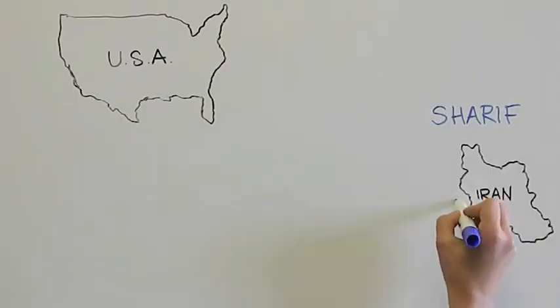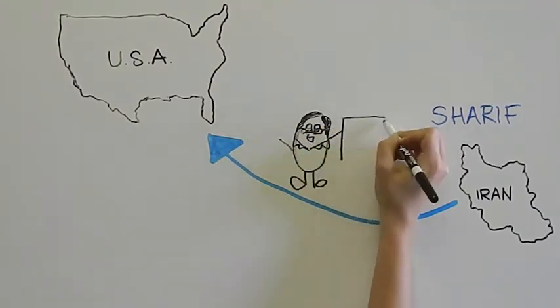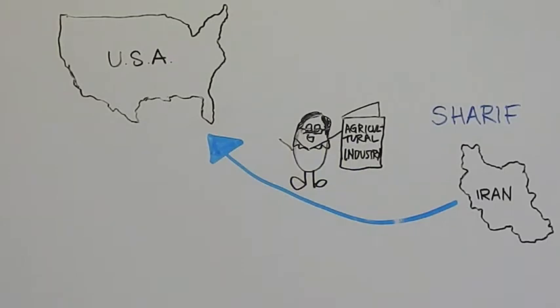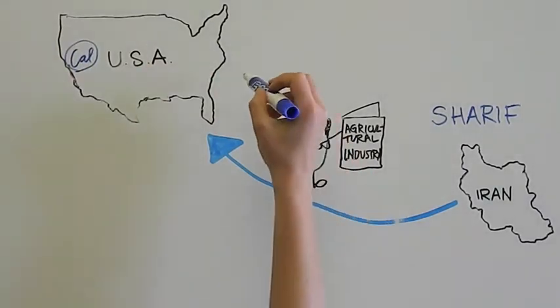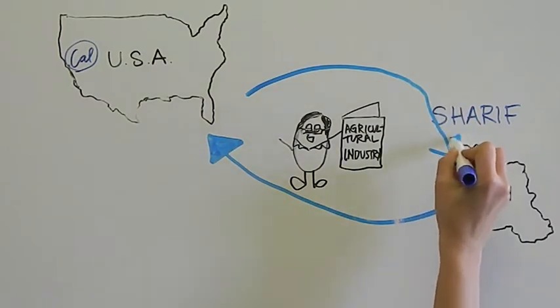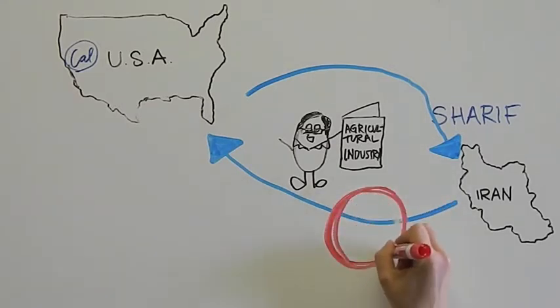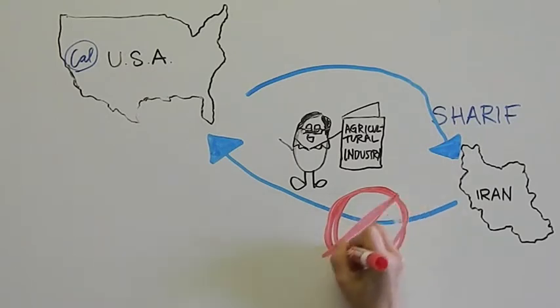In the 1970s, Sharif's father, Jafar Bordbar, left Iran for UC Berkeley to study agricultural industry. In the late 1970s, he returned home to Iran for a short visit to see his family. Because of Iran's political climate in 1979, Jafar was unable to return to the United States to finish his studies at Cal.